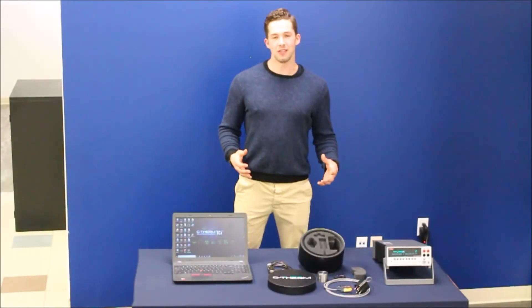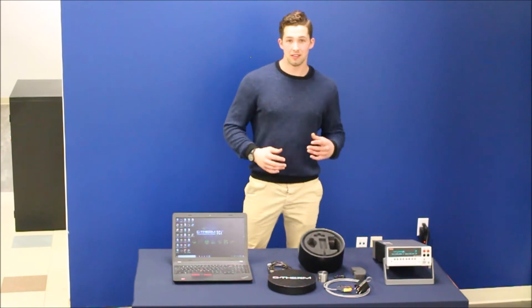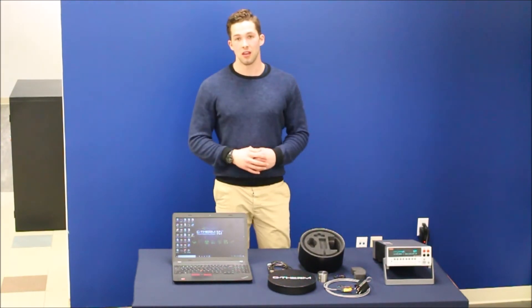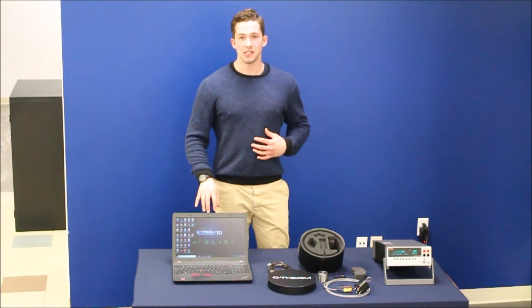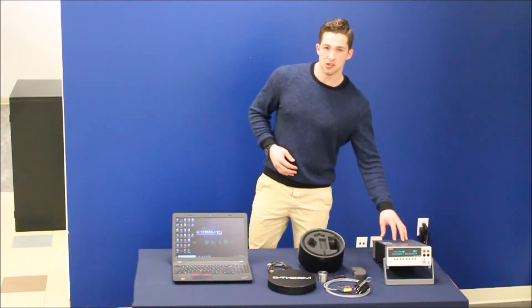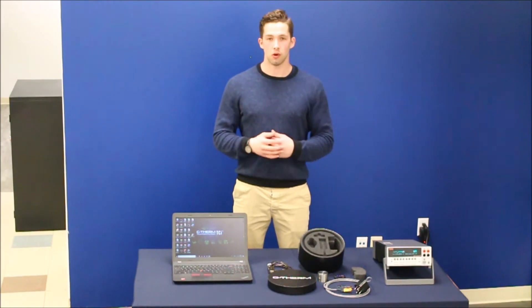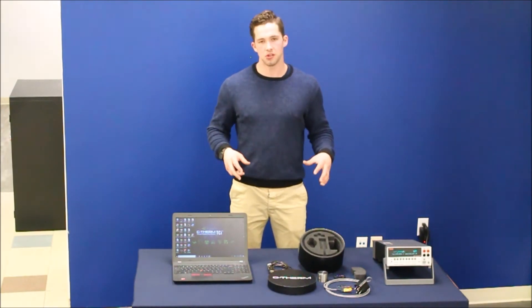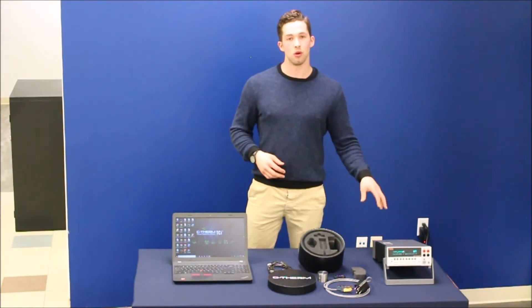So now that we know everything that's included in the kit, I'm also going to take you through what's not included. First, you're going to need a PC running Windows 10 either Home or Pro Edition, and you're also going to need a source measure unit. We suggest the Keithley 2400 series. For the purposes of this demonstration, I'm going to be using the Keithley 2401.